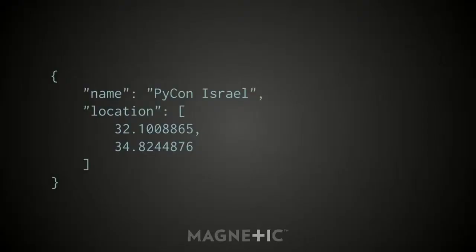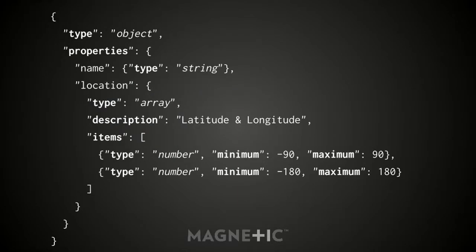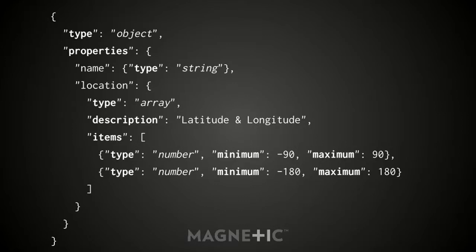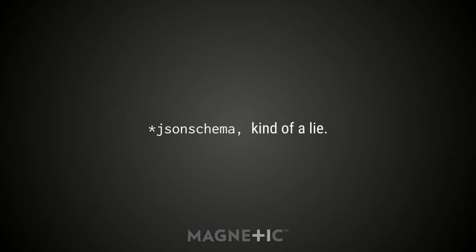Going back to our original object, if we wanted to define a schema for it — it's not the hardest thing. It says type object, properties — meaning here's the schema for each of the properties in this object, if that property is present. If it's not there, no problem; there are other validators that make things required, but this just says if the name property is there it needs to be a string, if the location property is there it needs to be an array. Description is just metadata — since JSON doesn't have comments, it tells the reader we're representing a latitude and longitude. The array should have two items: the first should be a number between -90 and 90, the second between -180 and 180. Validating that against the schema — no problem.